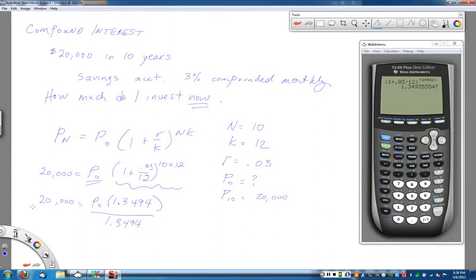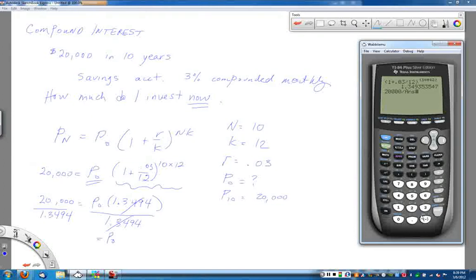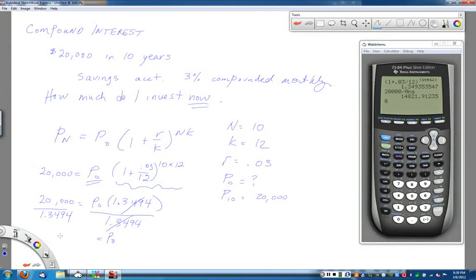So in this case, I want to get the P0 by itself, so I've got to divide by that 1.34 crazy number. When I do that, that's going to get the P0 alone, and on the other side I'm going to get the answer. I'm going to do 20,000 and then I want to divide it by 1.349. Or, the other thing you can do, since this is the last answer that the calculator got, if you hit the second button and then hit the negative button, see how it says ANS right above that button? What that says is use the last answer I got. The advantage of doing that is it remembers all of these old decimal points. So I do $20,000 divided by the last answer, hit enter, and I get that all I need to invest now is $14,821.91. Now and 10 years from now, that will have grown to $20,000.